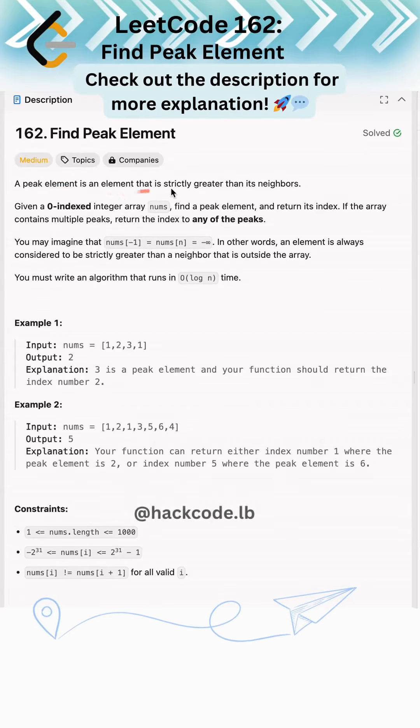Find the peak element. A peak element is an element that is strictly greater than its neighbors. Given a zero-indexed integer array nums, find a peak element and return its index. We just need to return the index for the peak element.